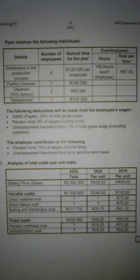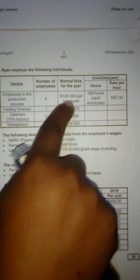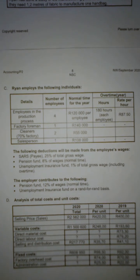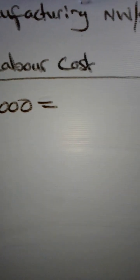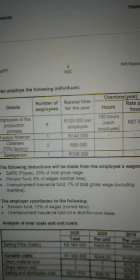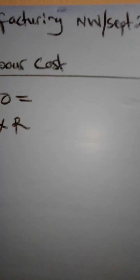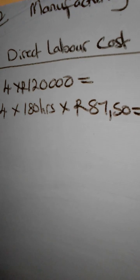We'll use information C, which tells us about the employees Ryan employs, to calculate the direct labor cost — the money given to factory workers. There are four employees on normal time earning R120,000 per employee. There is also overtime: four employees working 180 hours each at a rate of R87.50 per hour.